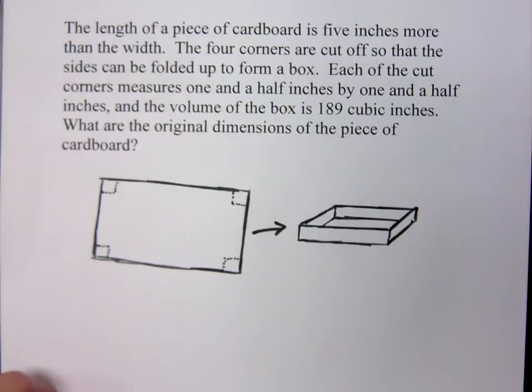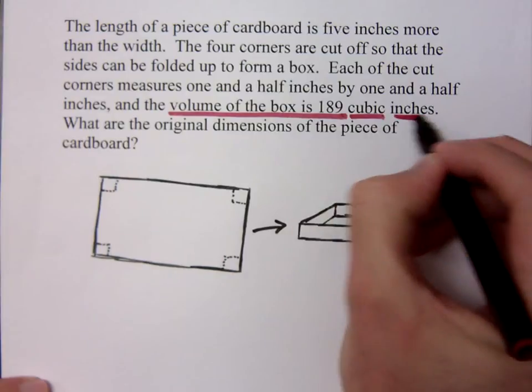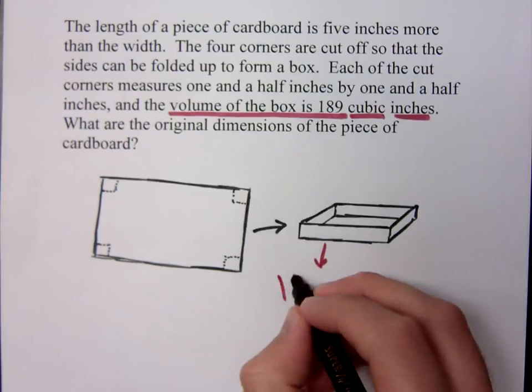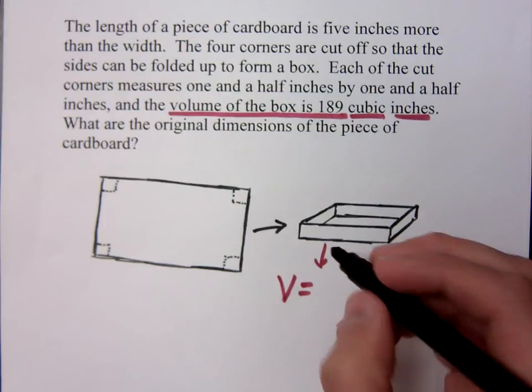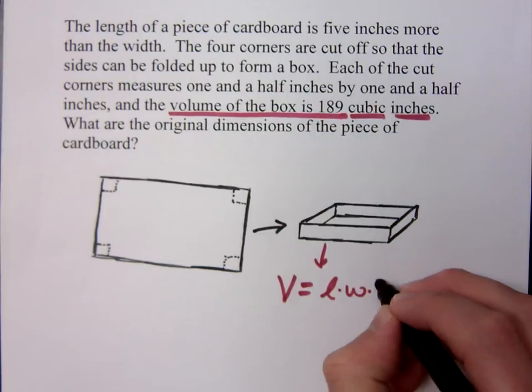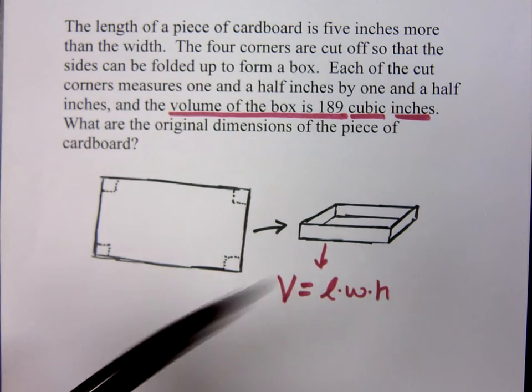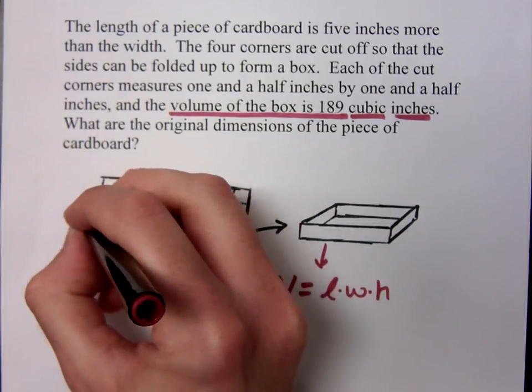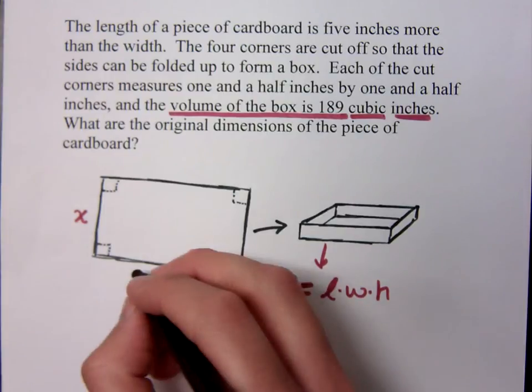Now it's all about understanding what the dimensions are, because as you read this problem it tells you what the volume of this box is going to be. It says the volume is 189 cubic inches. The formula for any rectangular prism is length times width times height. Now in the original dimensions it says that the length is five inches more than the width. I don't know this width so I'm just going to say X. Then how would you represent the length? This is X plus 5.